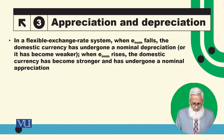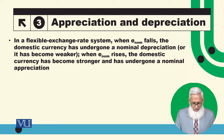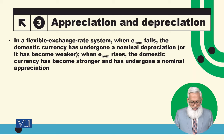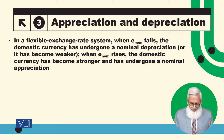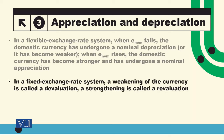In a flexible exchange rate system, when the nominal exchange rate falls, the domestic currency has undergone a nominal depreciation. When it rises, the domestic currency has strengthened and undergone nominal appreciation. So in a flexible exchange rate system, a weakening of the currency is called depreciation, whereas in a fixed exchange rate system, if the currency is weakened it is called devaluation, and if it is strengthened, it is called revaluation.